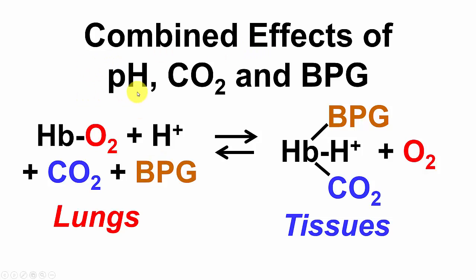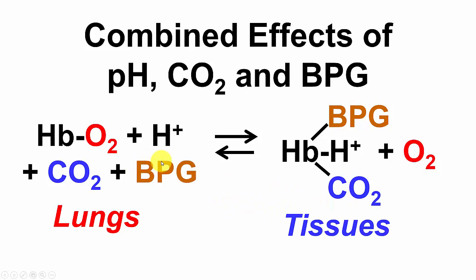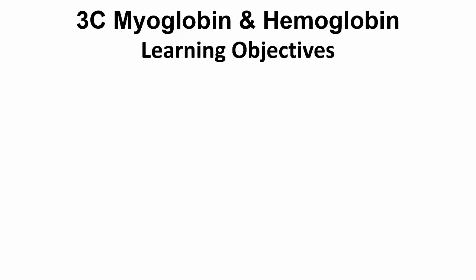Here's the combined effect of pH, CO2, and BPG. In the lungs, hemoglobin loaded with oxygen releases protons and releases CO2, which we exhale, and BPG cannot bind to oxyhemoglobin. As it goes out into the tissues, O2 is released and used for metabolism. CO2 from metabolism binds to form carbaminohemoglobin, protons bind, and BPG binds — all of which force off even more oxygen, resulting in better delivery to the tissues and making this process as efficient as possible.